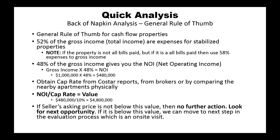Next, we need to obtain the cap rate to figure out the value of the property. You can obtain it from CoStar reports, from a broker, or by comparing nearby apartments physically. Now that we have the NOI and the cap rate, we can figure out the property value — which equals NOI divided by the cap rate. If the NOI is $480,000 and the cap rate is 10%, the property value is $4.8 million. If the seller's asking price is above this value, take no further action and go to the next opportunity. If it's at or below this value, move to the next step: an on-site visit.